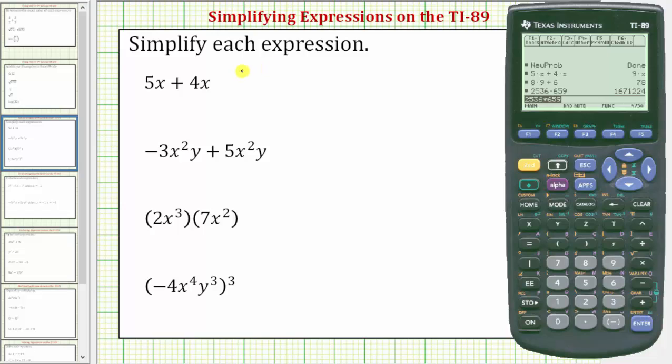Welcome to a tutorial on how to simplify expressions on the TI-89 graphing calculator. The first step from the home screen is to use the new problem function located under F6. To access F6 we press second F1.